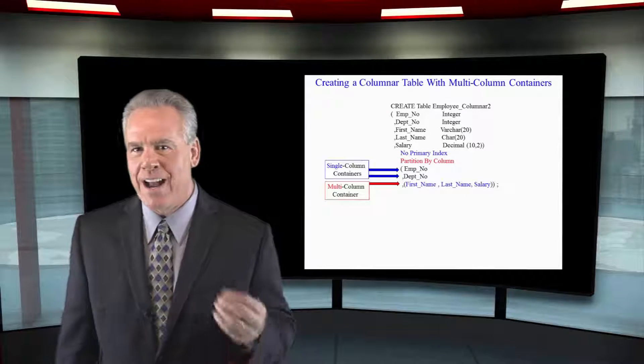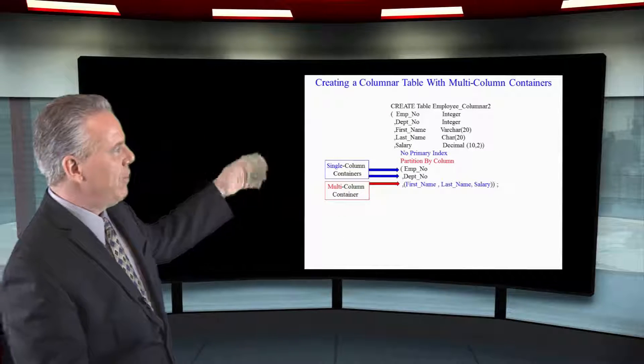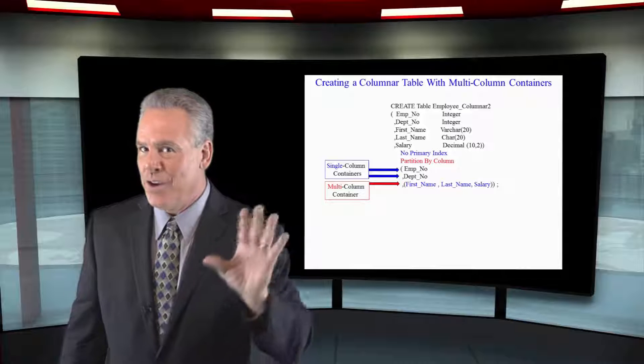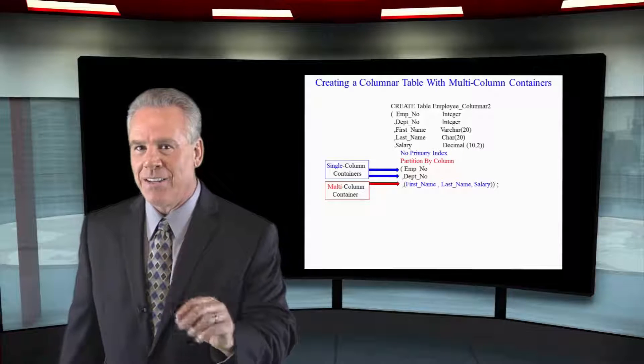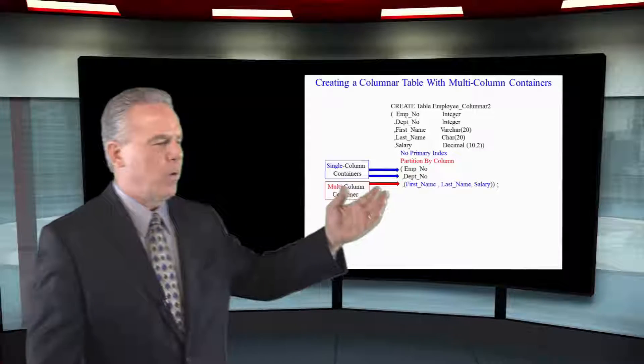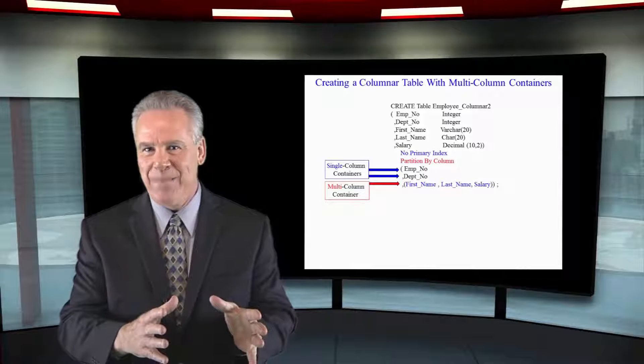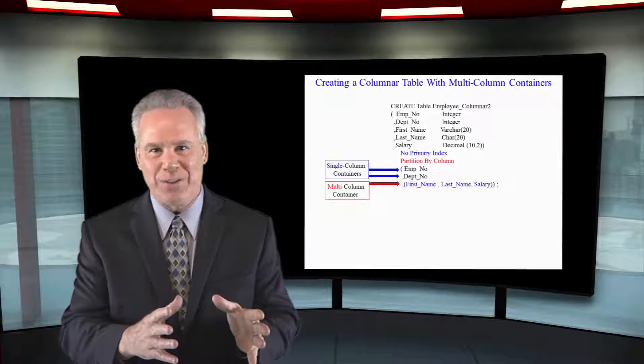Here's another way to create a columnar table. Create table, table name, open paren, here's all of my columns and their data types, close paren, always no primary index. But now I say I want to partition by column emp no as its own container. Emp no is in its own block. I want dep no in its own block. And then I want first name, last name and salary all grouped together because most of the time people query those together.